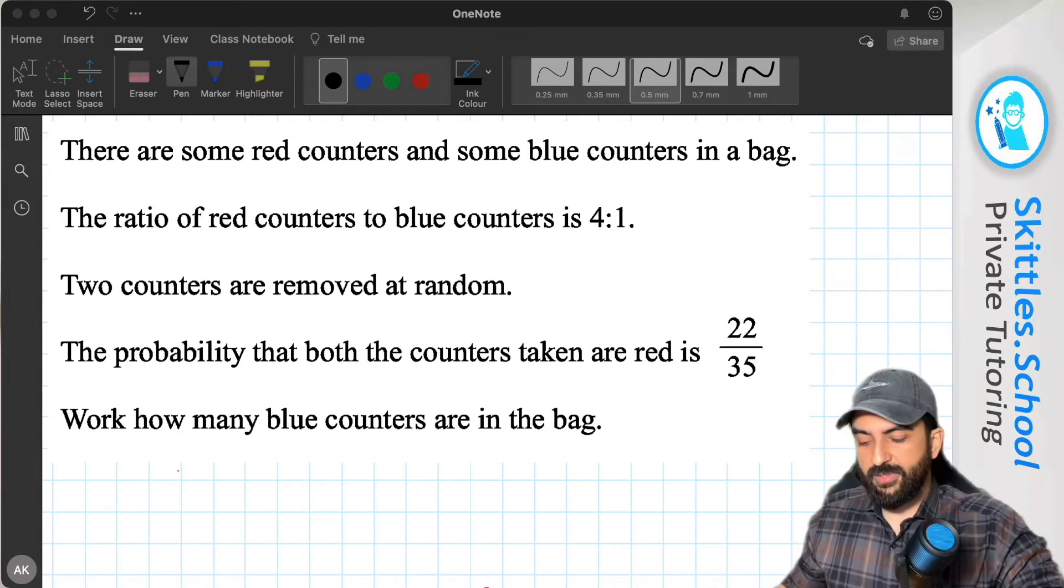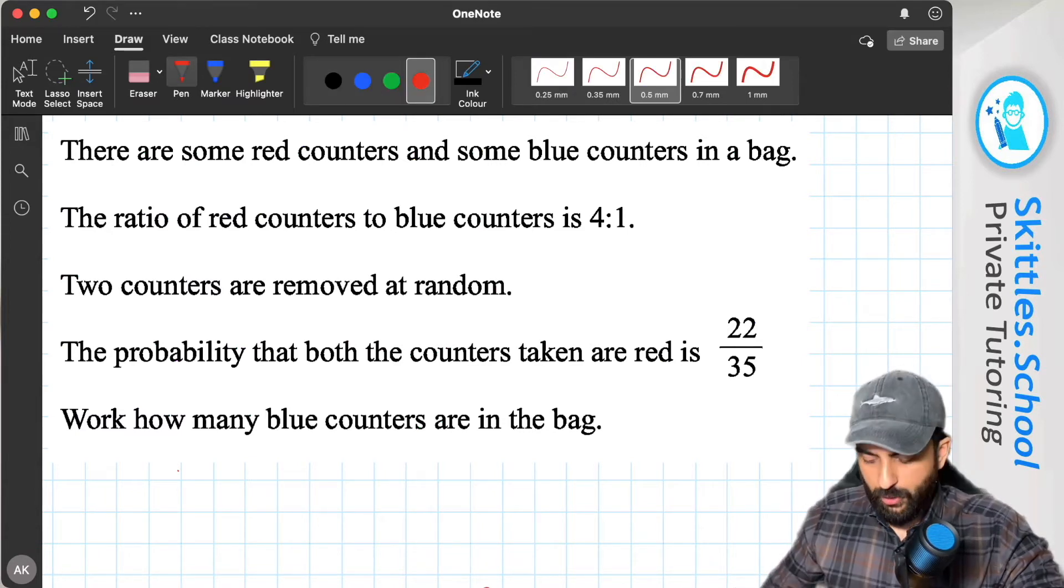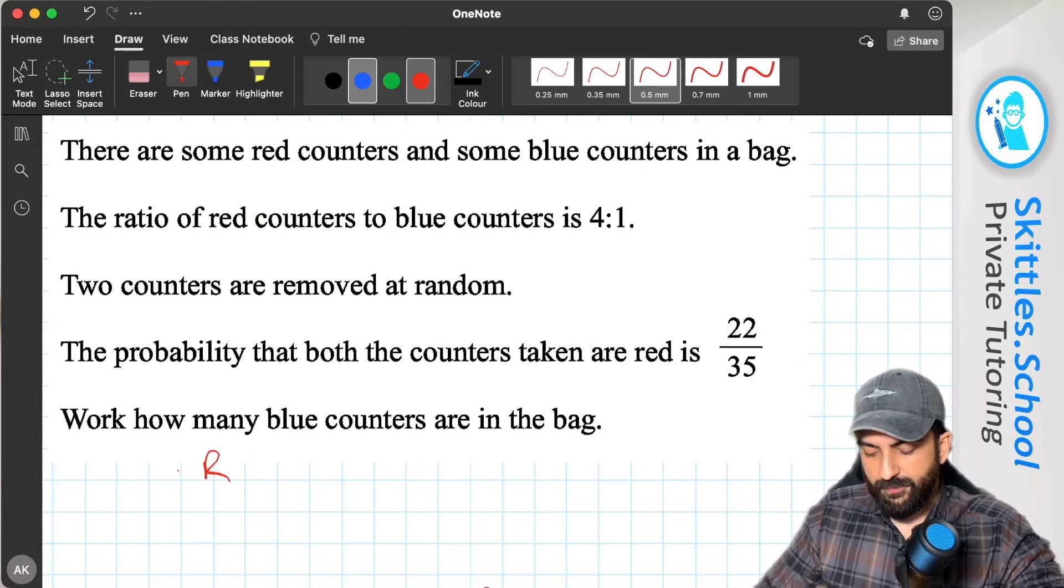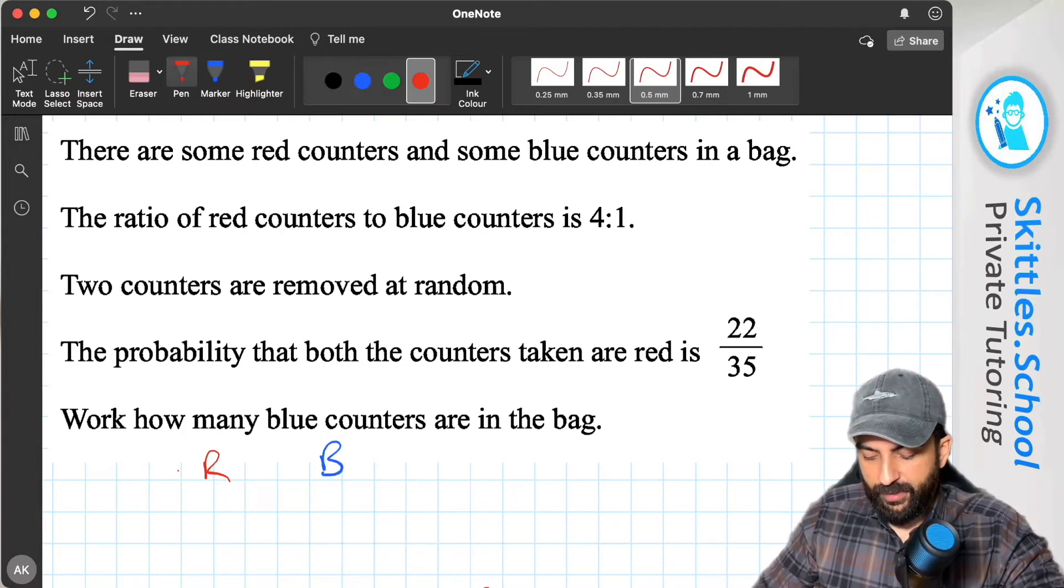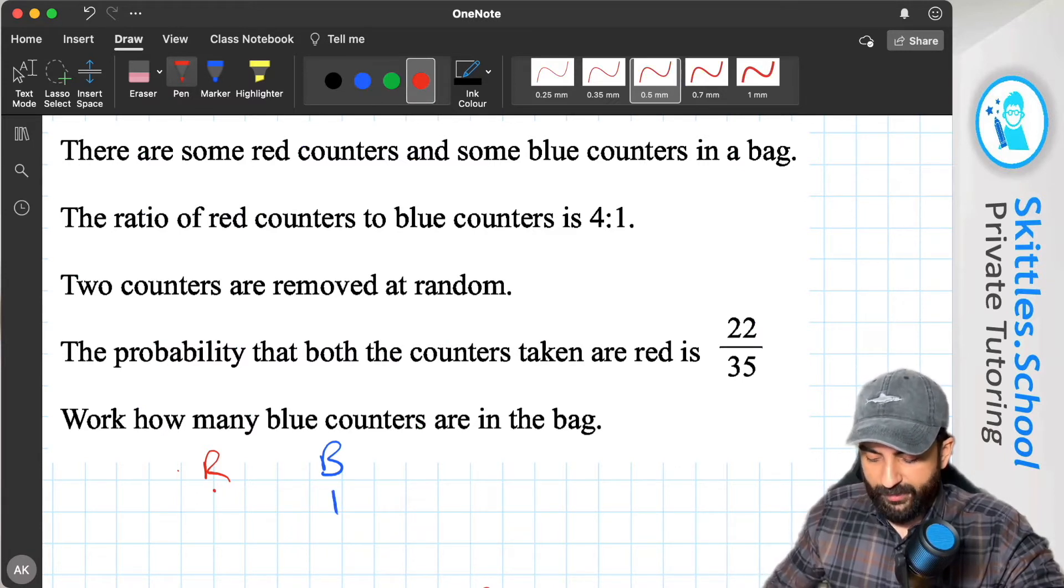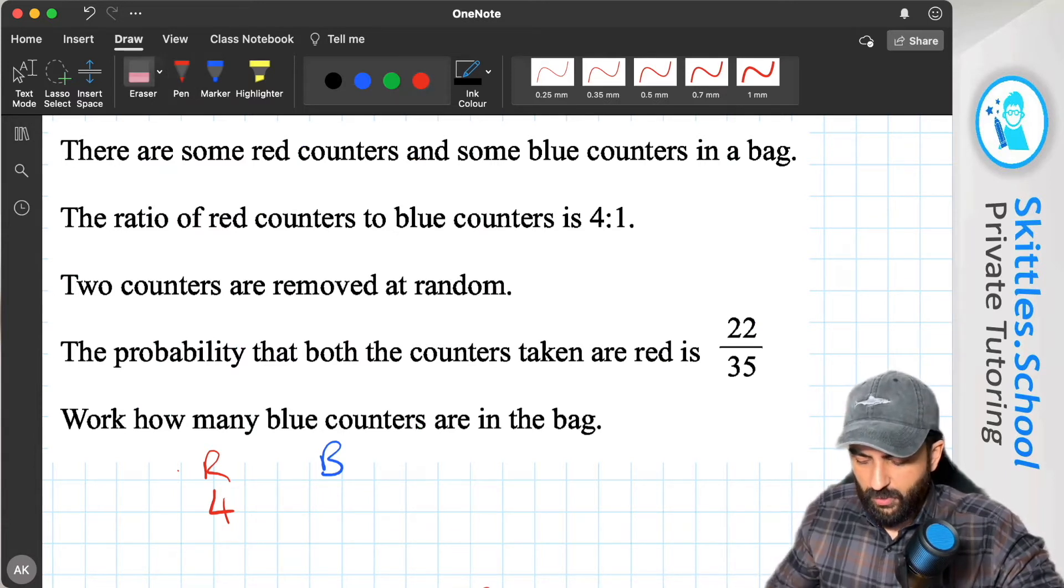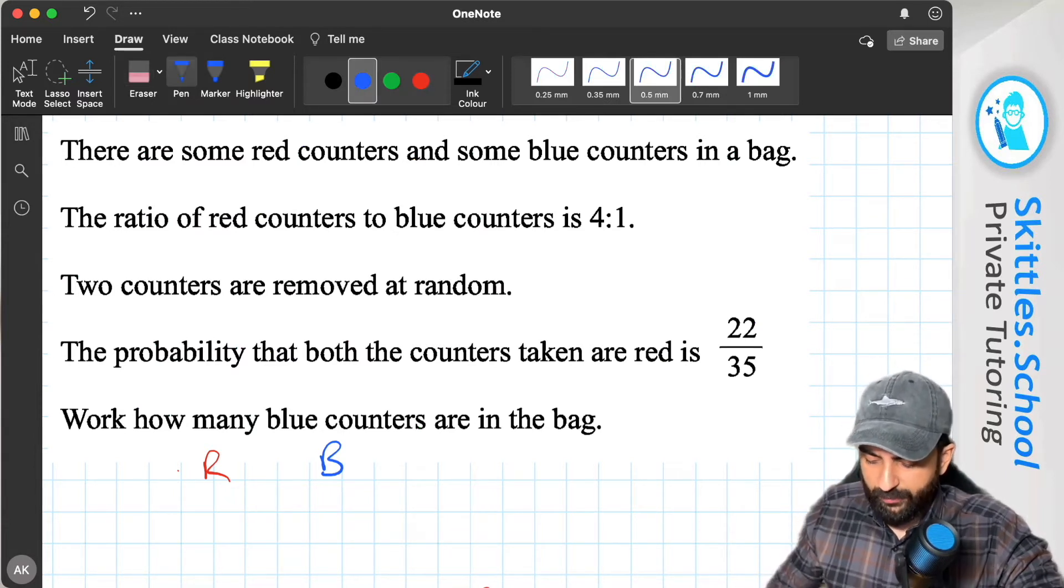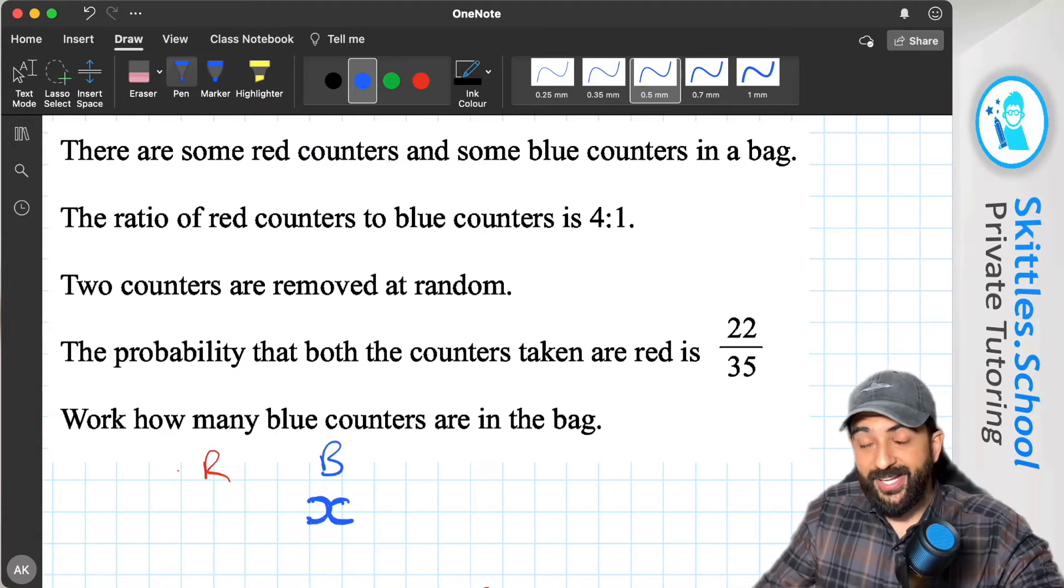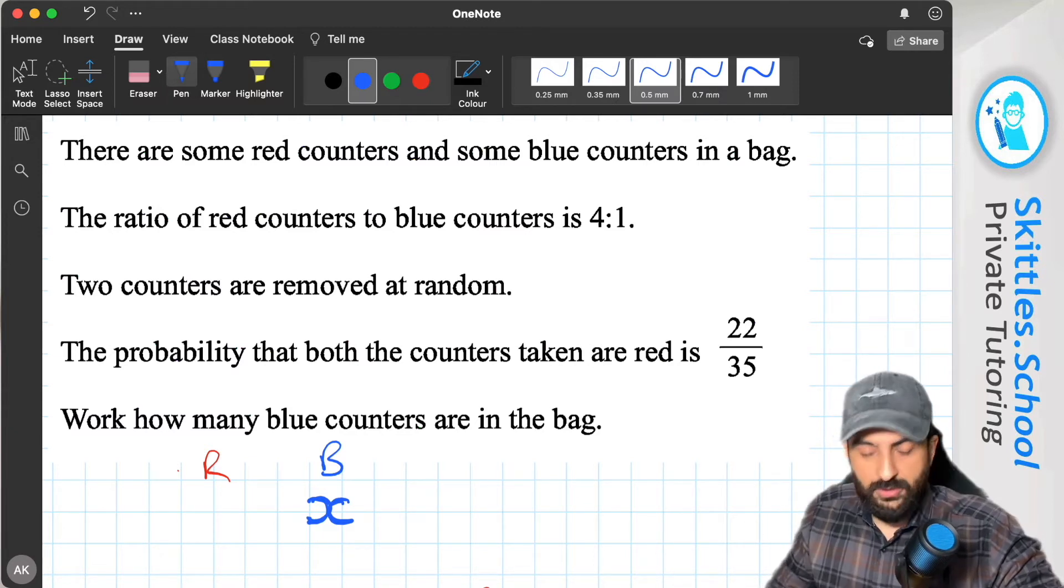Okay, so I'm going to start this by actually writing out the ratio. So we have red counters and we have blue counters. Now the ratio is 4 to 1. So for every one blue counter you have, you have four red counters. But we don't know how many blue counters there are. So I'm going to say, if blue counters was x, we know that the red counters is four times as many as the blue counters. So it would be 4x.